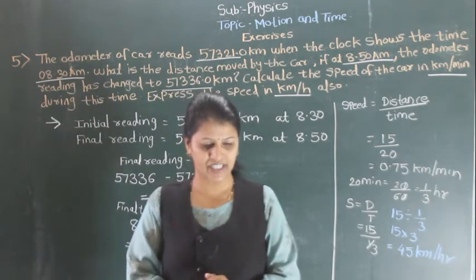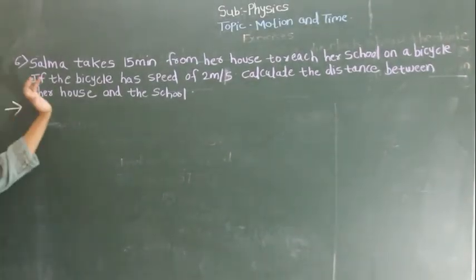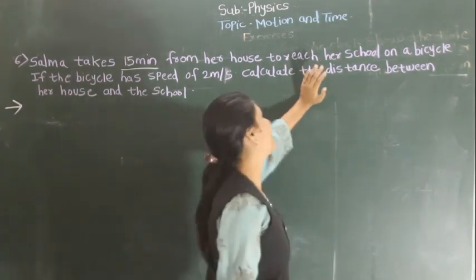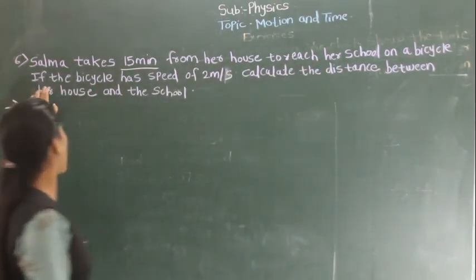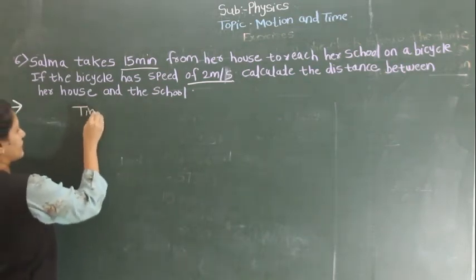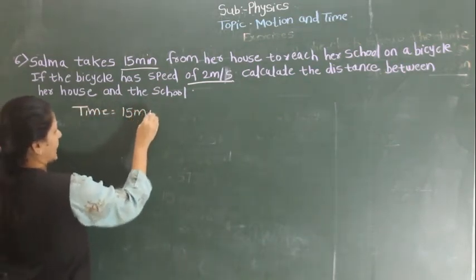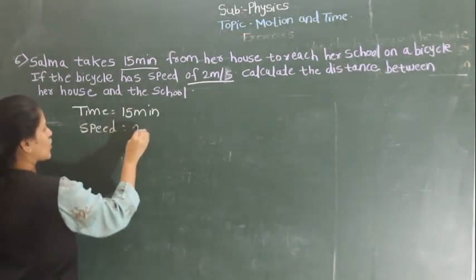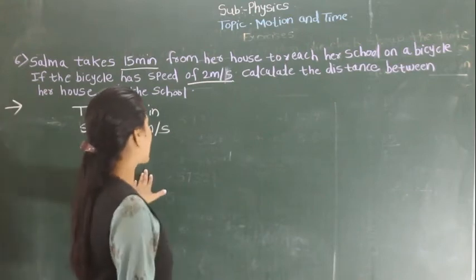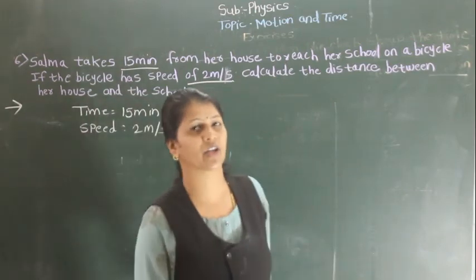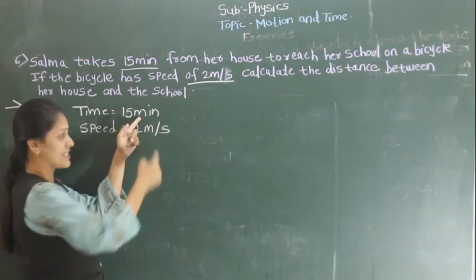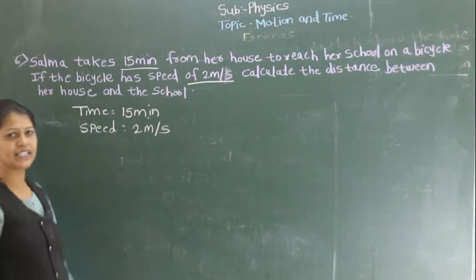Now problem 6. It takes 50 minutes for a girl to travel from her house to reach her school by bicycle. If the bicycle has a speed of 2 meters per second, calculate the distance between her house and the school. The time is given as 50 minutes and the speed is 2 meters per second. Notice the speed is in meters per second but time is in minutes, so you have to convert the time into seconds.